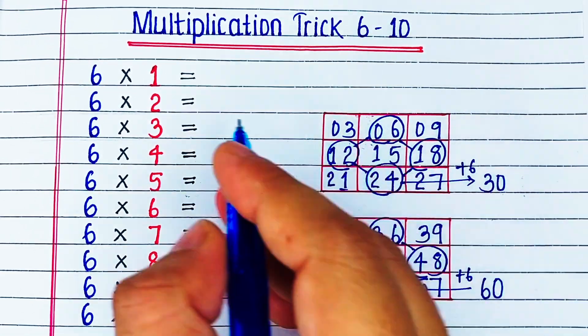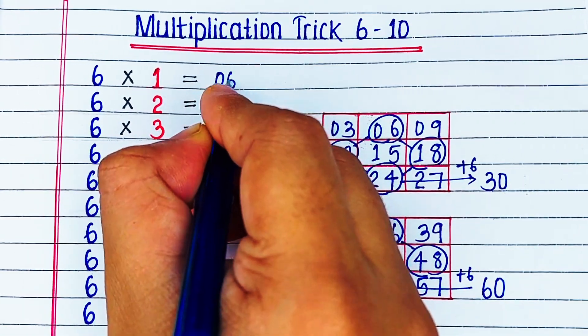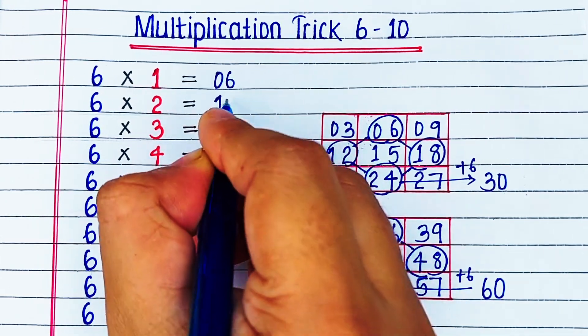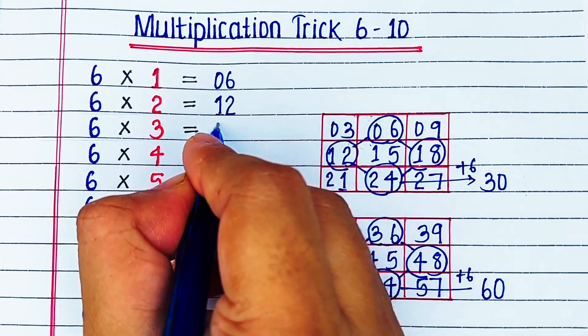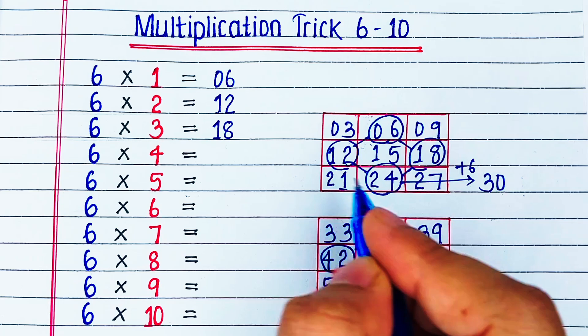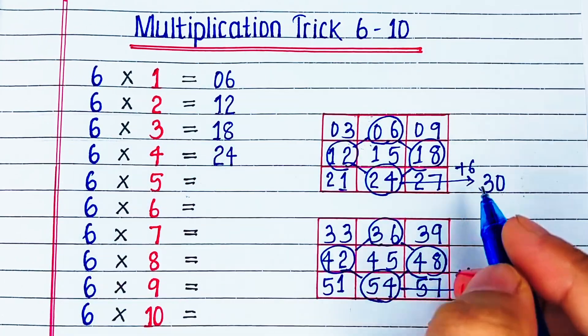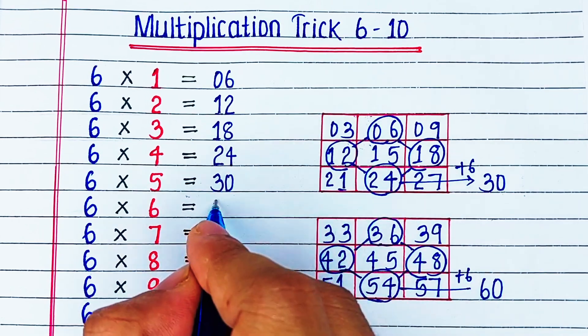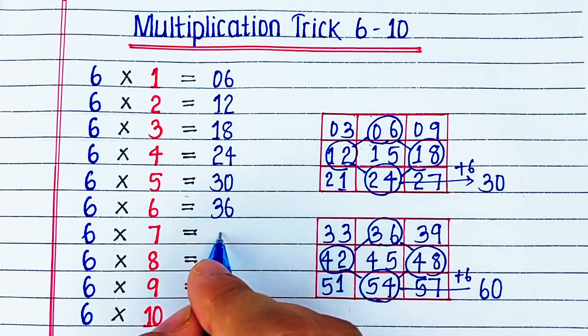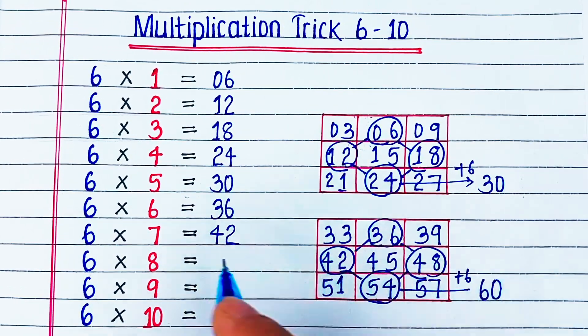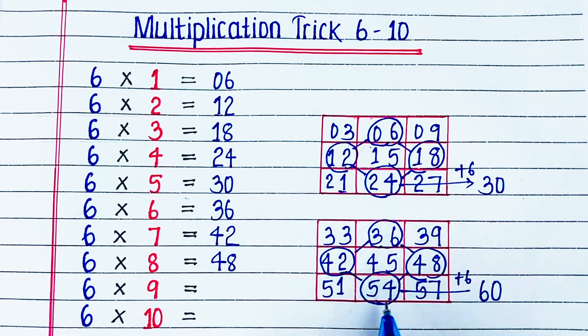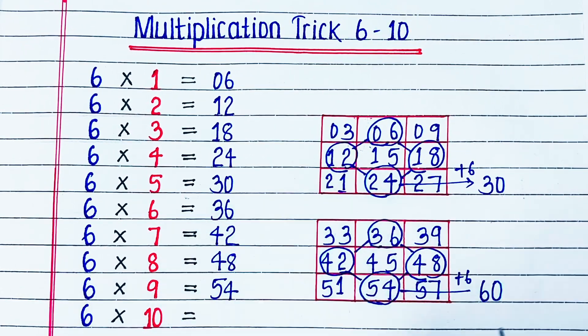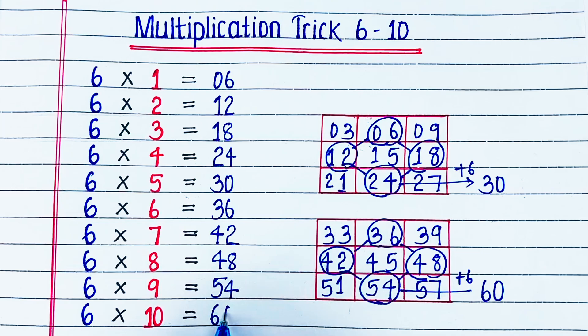So let's recite. 6 1s are 6, 6 2s are 12, 6 3s are 18, 6 4s are 24, 6 5s are 30, 6 6s are 36, 6 7s are 42, 6 8s are 48, 6 9s are 54, 6 10s are 60.